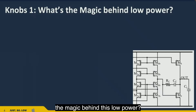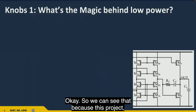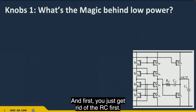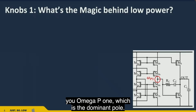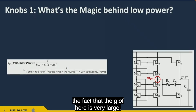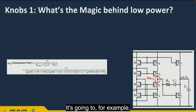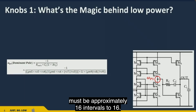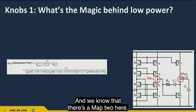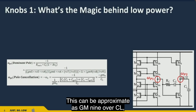Now let's look at what's behind this low power. In this project we use a two-stage amplifier with a compensation capacitor CC between the two output stages. Focusing on CC: placing CC causes omega_p1, the dominant pole, to become extremely small due to the Miller approximation, since the gain Av2 is approximately 16. Omega_p2 can be approximated as gm9 over CL, and since CL is given as 10 picofarads, we have to consider this carefully.